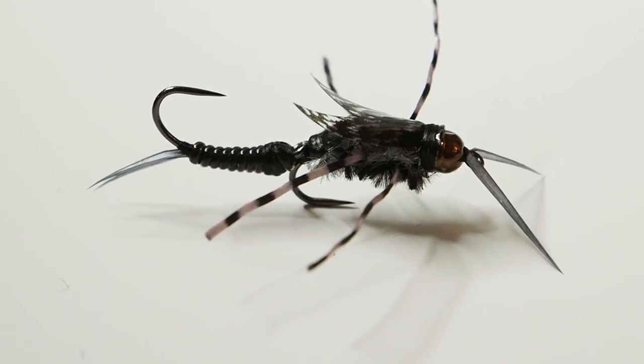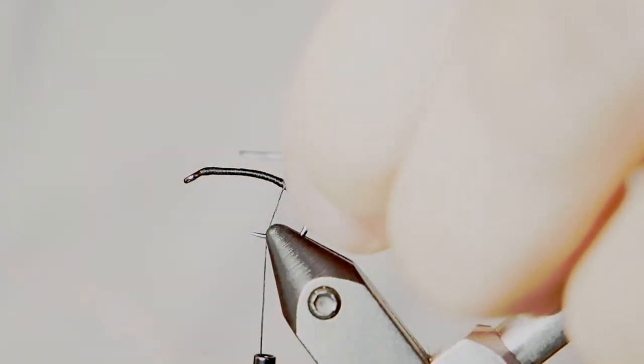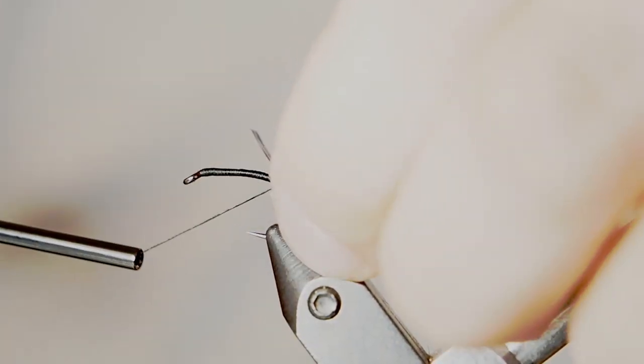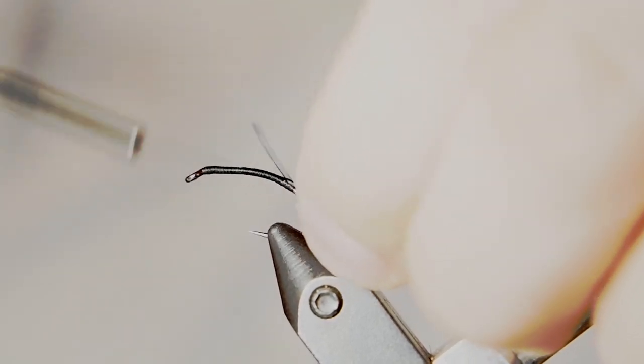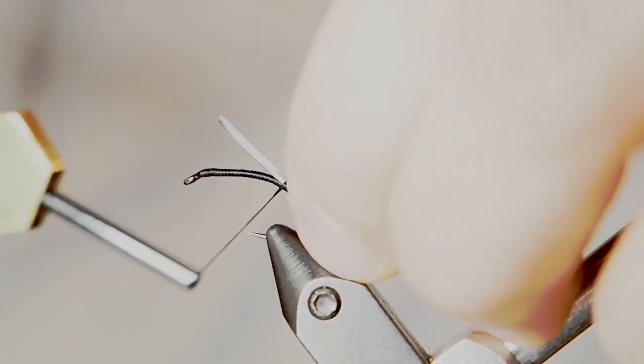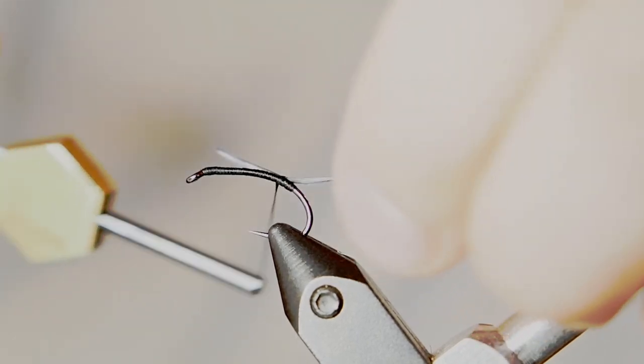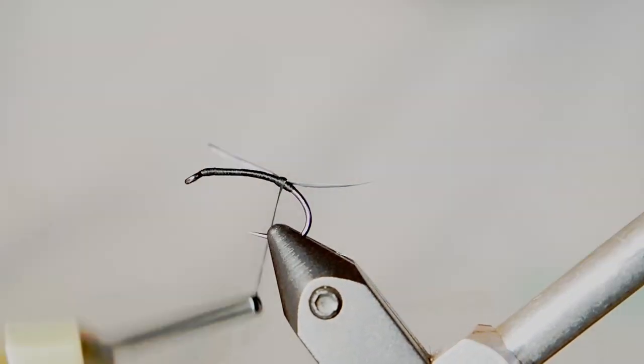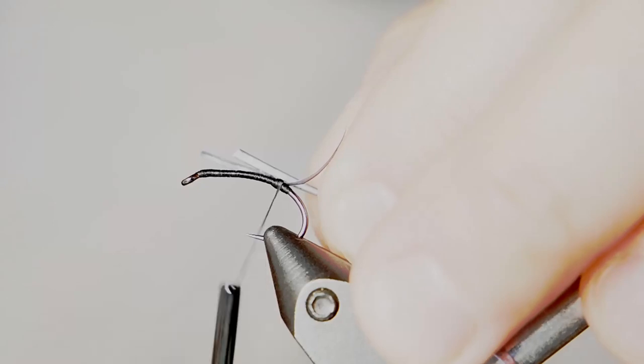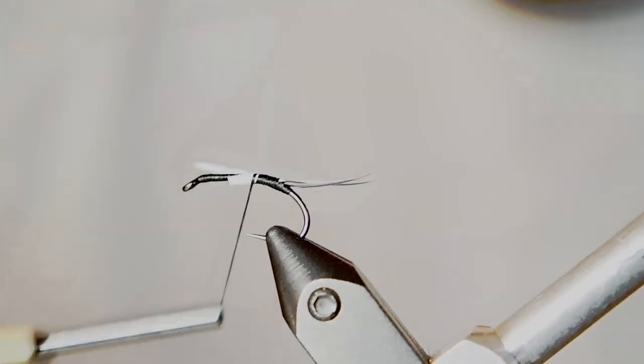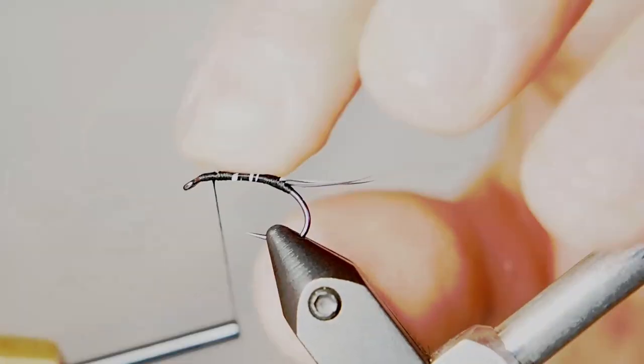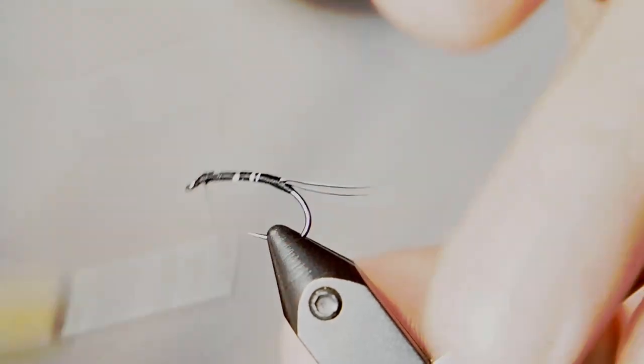Next, we're going to put on our goose biots, black goose biots for this pattern. However, we actually want them upside down, so to speak. The goose biots are actually curving upwards when we tie them onto the hook here, and I'm trying to get that nice splayed out pattern. We're going to turn this hook upside down when it actually goes on to the nymph itself, and so then those goose biots will be curving downwards.